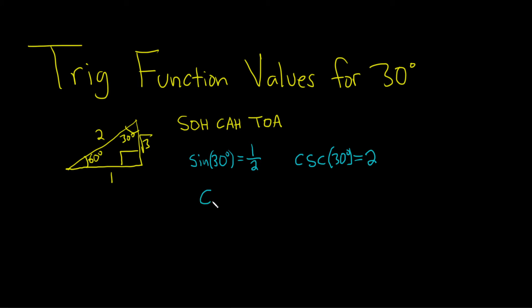Let's do cosine now. Cosine of 30 degrees. Cosine is adjacent over hypotenuse. So the adjacent here is 1. Whoa, wrong angle.